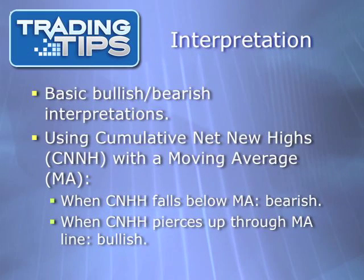In general, positive net new highs are considered bullish, and negative net new highs are considered bearish. But a better way of using this statistic is by combining cumulative net new highs with a moving average of cumulative net new highs. When cumulative net new highs falls below the moving average, that's bearish. When cumulative net new highs pierces up and through the moving average, that's bullish.